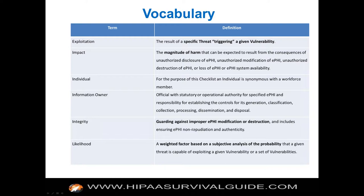Integrity means guarding against improper ePHI modification or destruction. This one is crazy hard — it's a requirement, but how do you actually track that ePHI was not modified or destroyed maliciously? You track it through authentication, encryption, and other processes. At the end of the day, accounting for even a few bytes of a record being changed is a non-trivial task, and you attack it by having all these other processes in place.